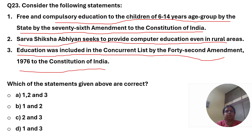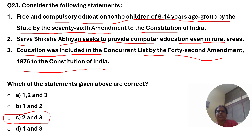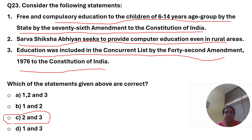The correct statements are: Sarva Shiksha Abhiyan seeks to provide computer education even in rural areas, and education was included in the concurrent list by the 42nd amendment 1976 to the Constitution of India.